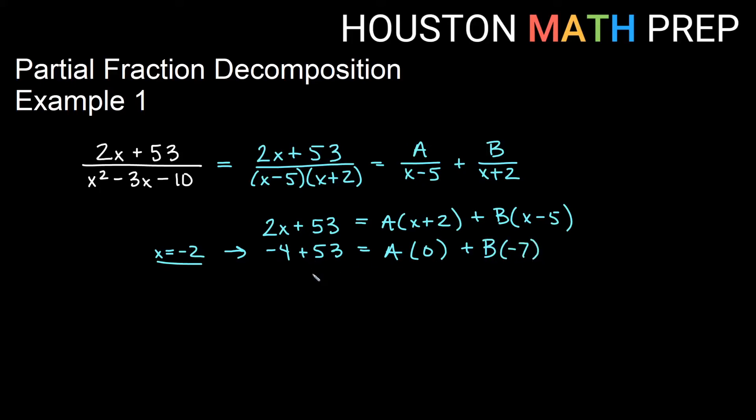If we do the arithmetic here, we'll get 49 over there. The A term goes away, and we'll get negative 7B. If we divide by negative 7 on both sides, that will give us that B is negative 7.